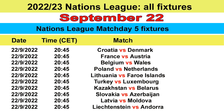Match Day 5. 22nd September, Croatia vs. Denmark. 22nd September, France vs. Austria. 22nd September, Belgium vs. Wales. 22nd September, Poland vs. Netherlands. 22nd September, Lithuania vs. Faroe Islands. 22nd September, Turkey vs. Luxembourg. 22nd September, Kazakhstan vs. Belarus. 22nd September, Slovenia vs. Azerbaijan. 22nd September, Latvia vs. Moldova. 22nd September, Liechtenstein vs. Andorra.